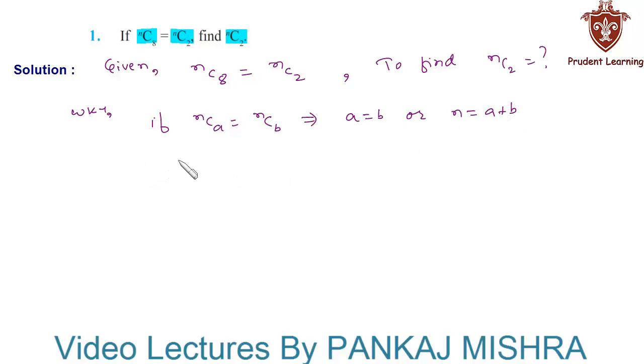Since we are given that Nc8, now we have Nc8 is equal to Nc2. Well, we know that 8 is not equal to 2. Therefore, we are going to use the second condition that is N is equal to A plus B. This implies that N is equal to 8 plus 2, that is 10.